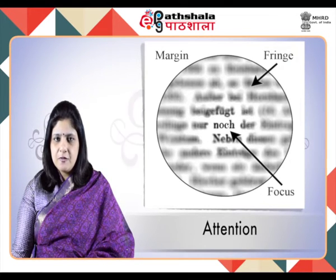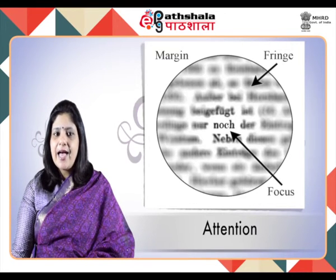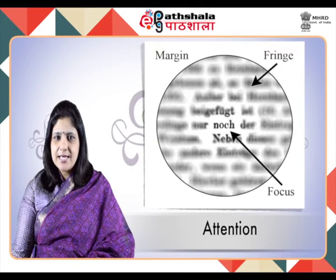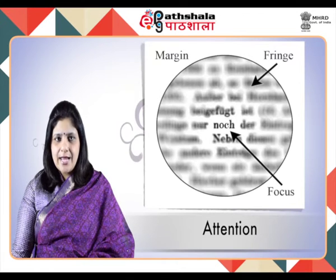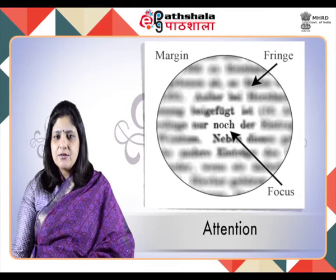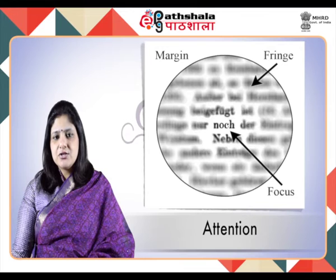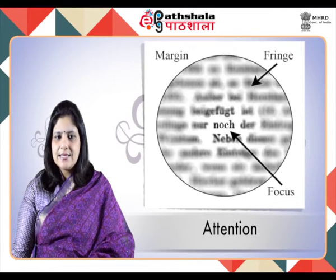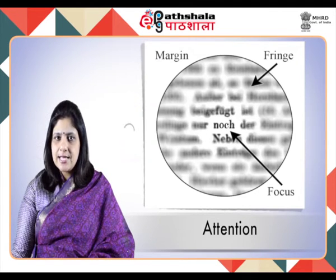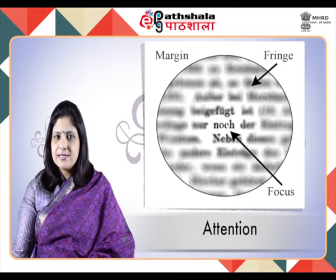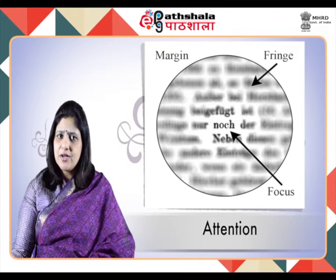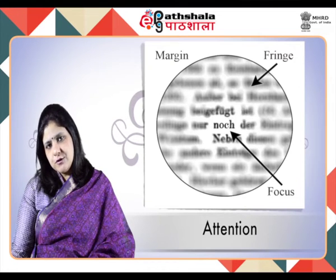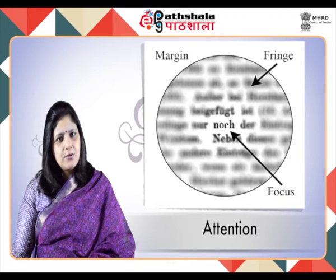Donald Broadbent in 1958 stated that attention is a result of a limited-capacity information processing system. His essential idea was that the world contains many more sensations than can be handled by the perception and cognitive capabilities of the human observer. Therefore, humans selectively attend to only some cues and tune out the rest. Our capacity to process information is limited at two levels — sensory and cognitive — and too many cues can lead to information overload.